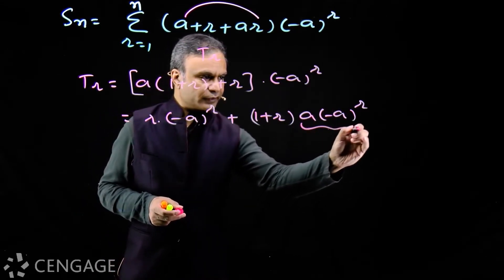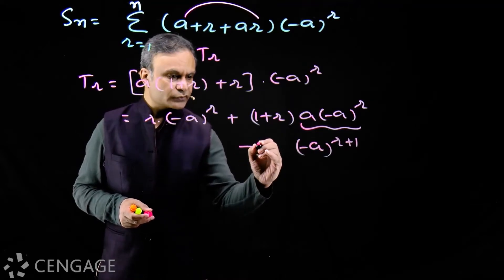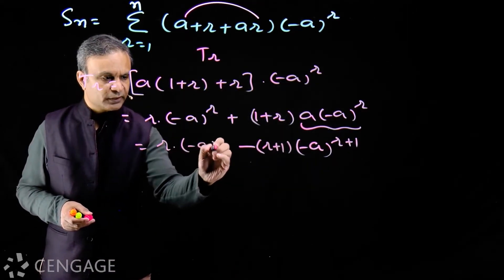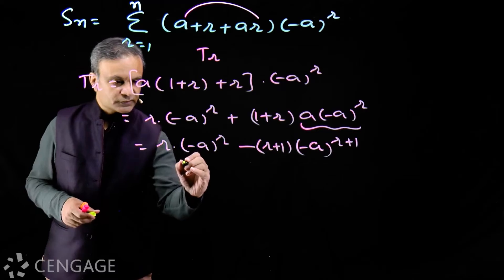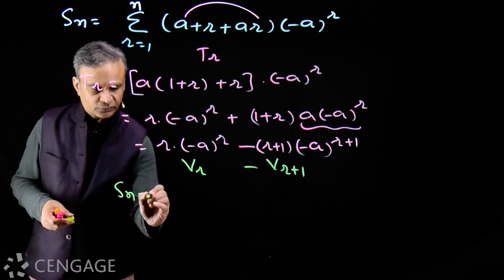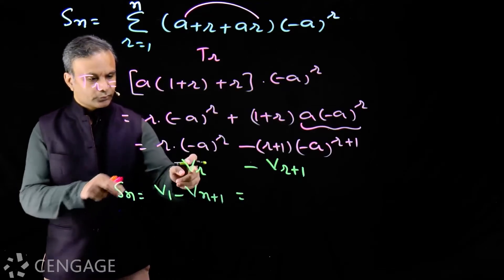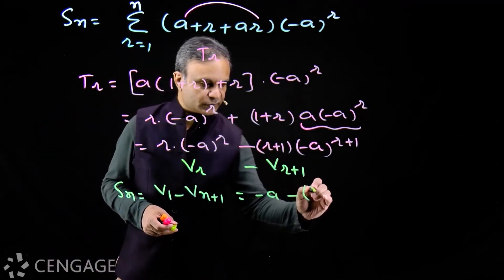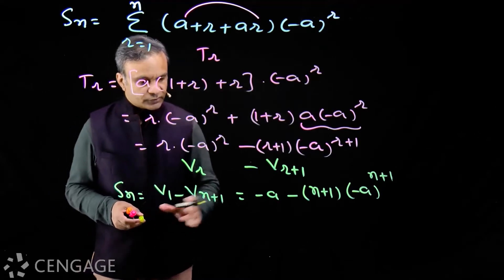We can modify this — (−a)^(r+1) with minus sign. So we have (r+1) multiplied by (−a)^(r+1) and here we have r multiplied by (−a)^r. So this is exactly the format we wanted — this is v(r), and this will be v(r+1). So sum of n terms will be v1 minus v(n+1). Putting r = 1 gives v1 = −a, and putting r = n gives v(n+1) = (n+1)·(−a)^(n+1).